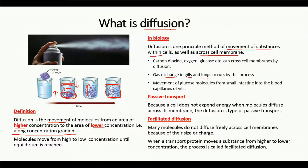For example, when we breathe, the concentration of oxygen is higher in the air, so the oxygen will move from higher concentration to the lower concentration which is in the lungs. Similarly, movement of glucose molecules from the small intestine to the blood capillaries also takes place because of diffusion.